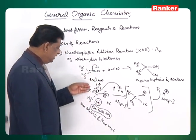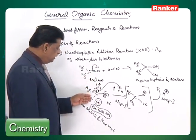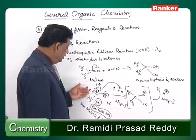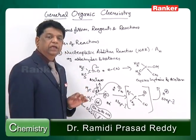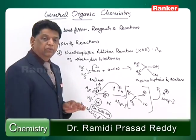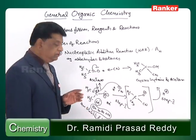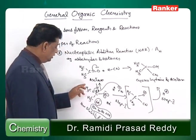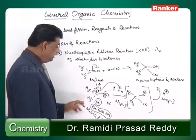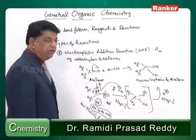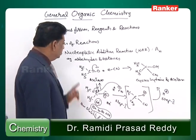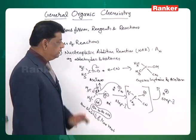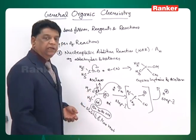Without any stabilizing groups, formaldehyde is the most reactive carbonyl compound toward nucleophilic addition. As more and more complicated groups are added, the rate of reaction decreases. This is the nucleophilic addition reaction — the complications will be discussed later.